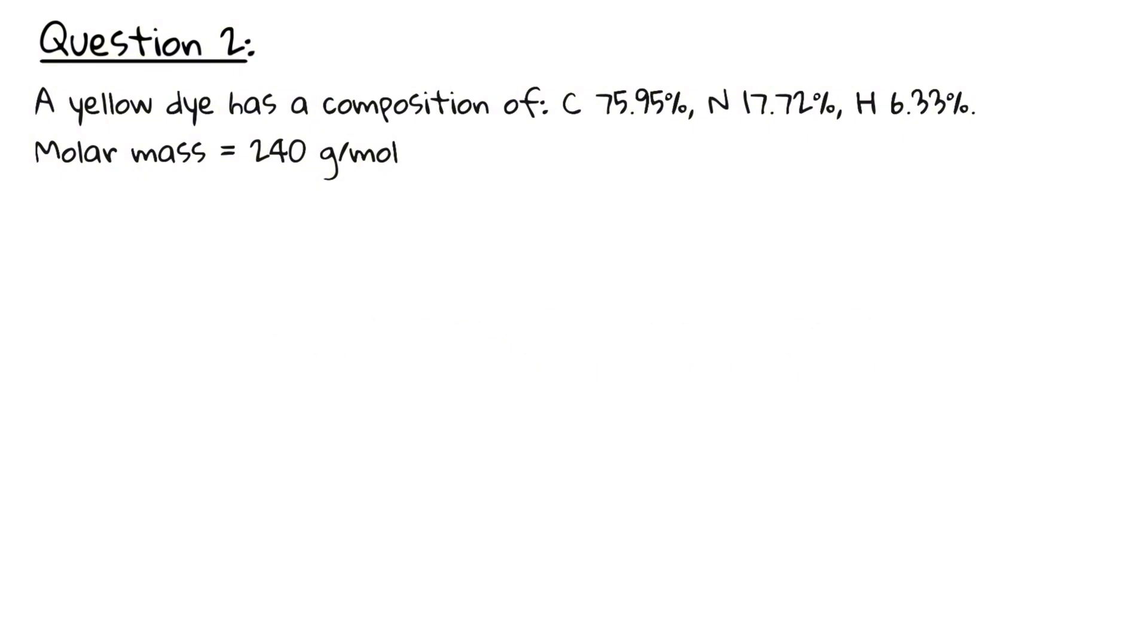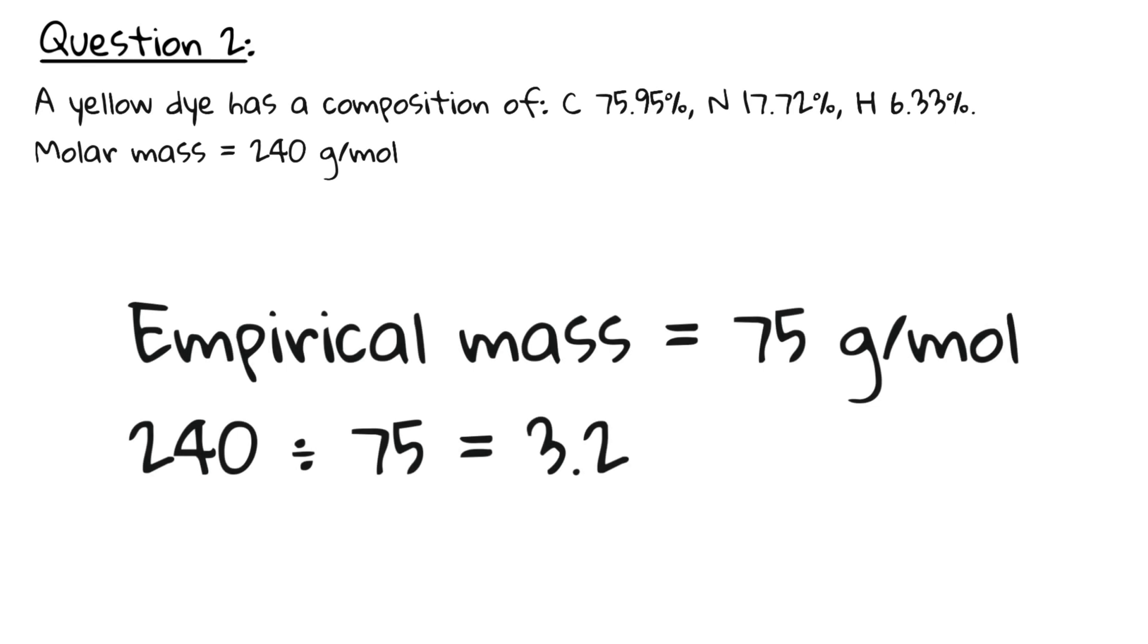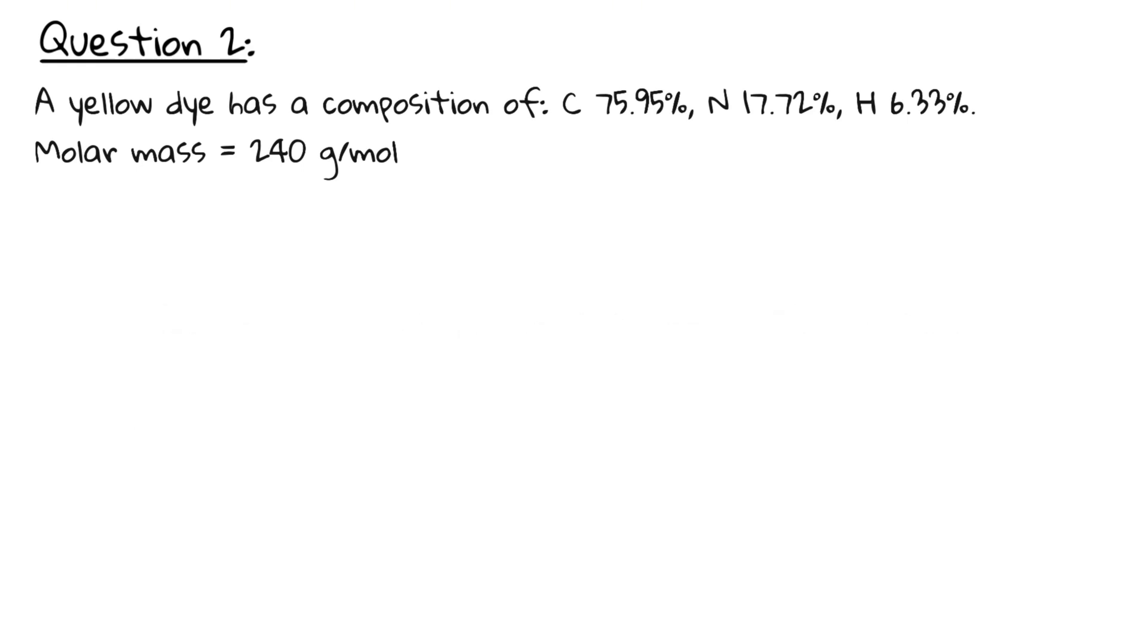Next, we calculate the empirical mass and divide. As we get a 3.2, we round it to the next whole number, which is 3. Finally, we multiply by 3 to get C15, N3, H15.